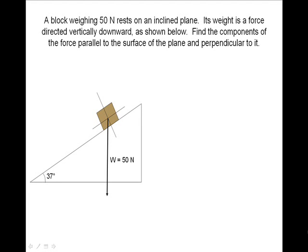Since our axis is tilted, we will draw a coordinate grid at the tail of our vector. Notice that our weight is actually in the third quadrant. That will make our x component and our y component negative.